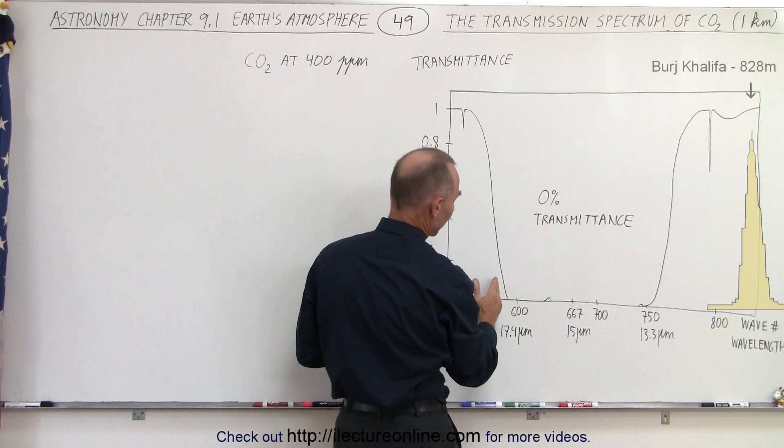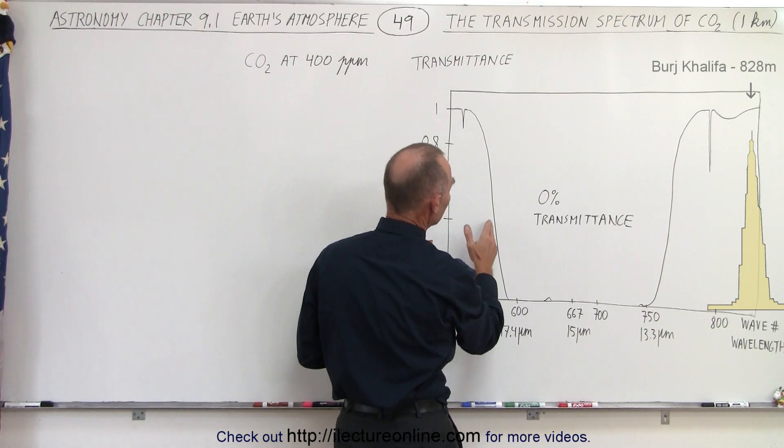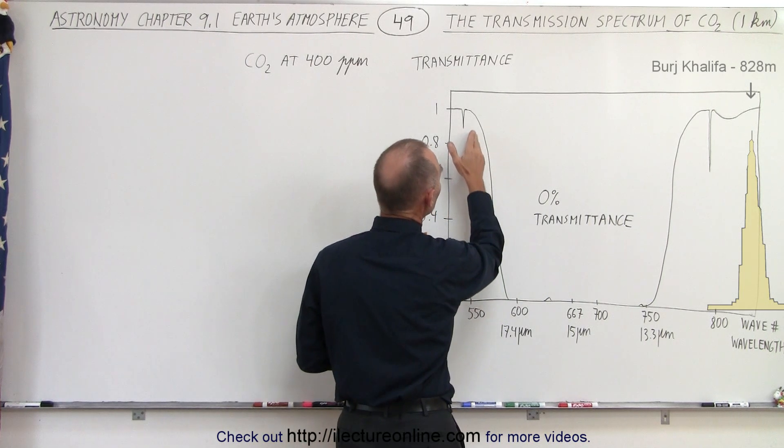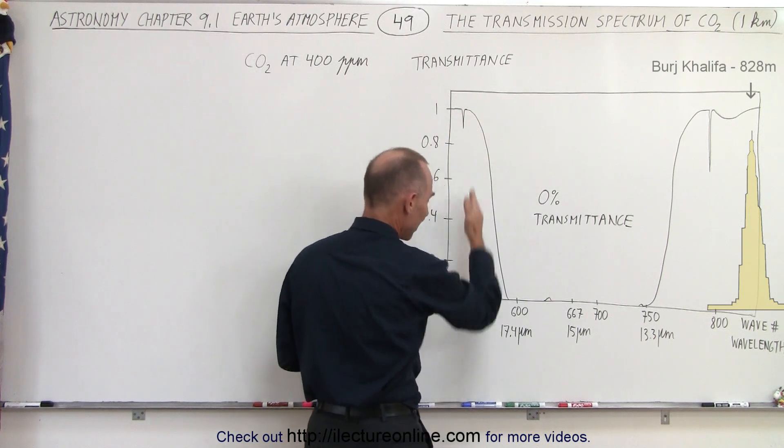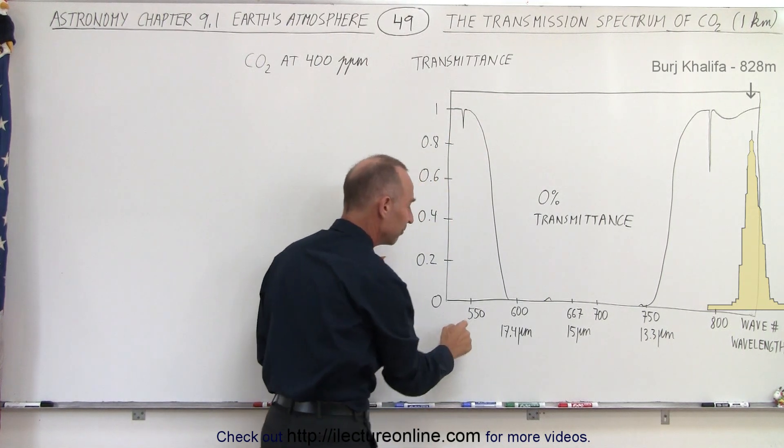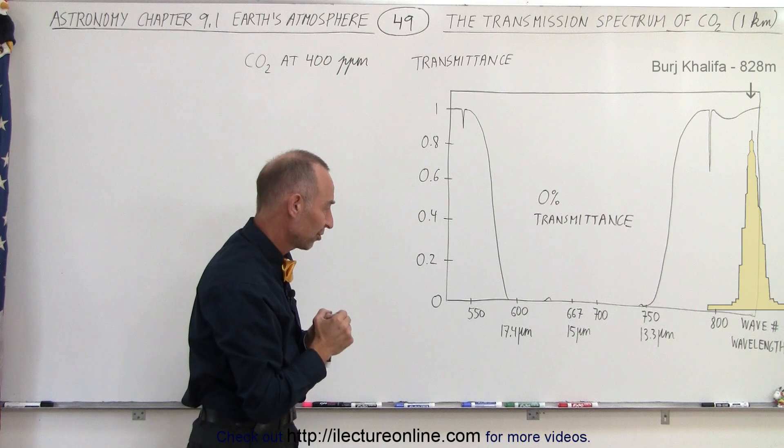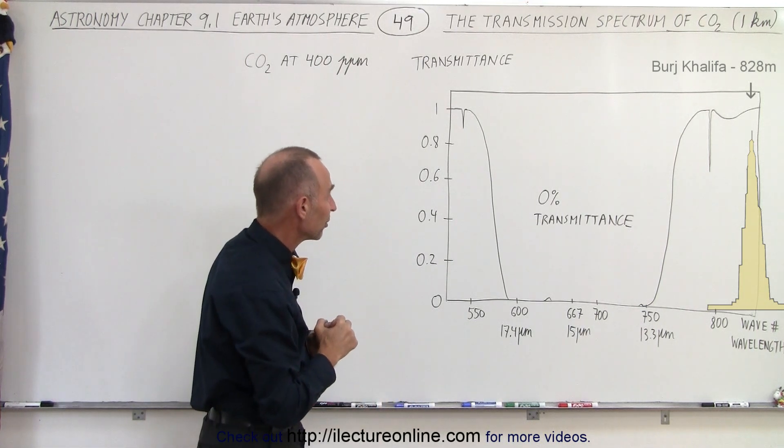Now you can see here that the percentage transmission continues to increase and reaches almost 100% transmission by the time we have the wave number at about 550 waves per centimeter, which is at about 18 micrometers.